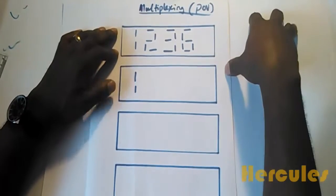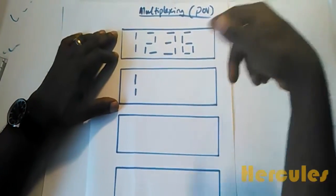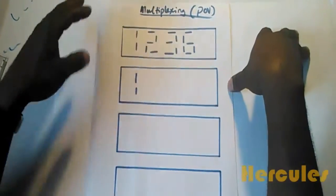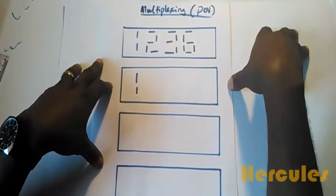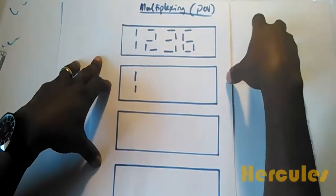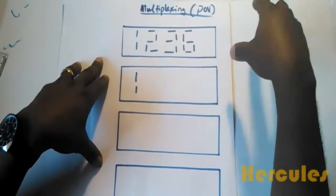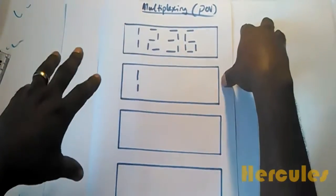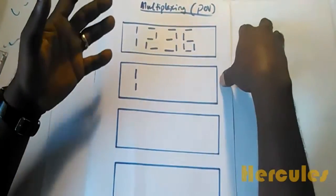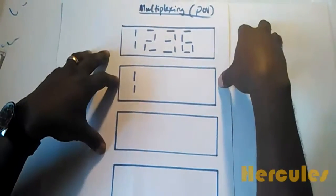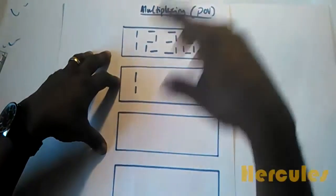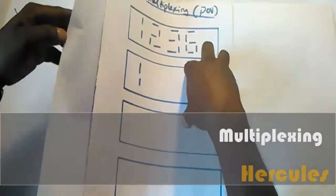The Arduino Uno we're using for this project has 20 input-output pins, so it's very limited. Multiplexing is going to help us save some pins. I want to show you some of the advantages of multiplexing before I explain how it's related to persistence of vision.